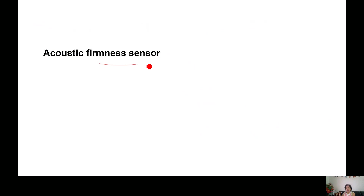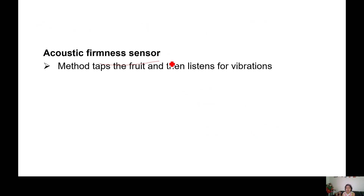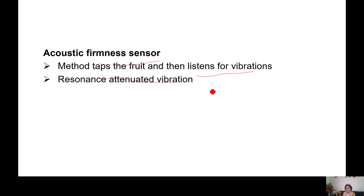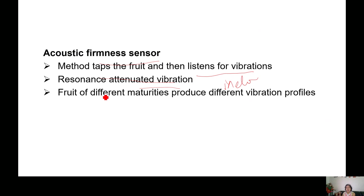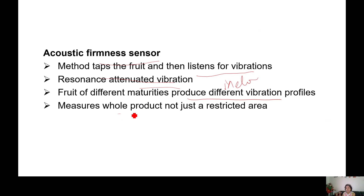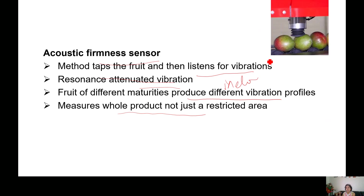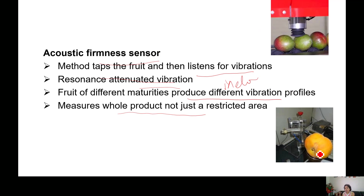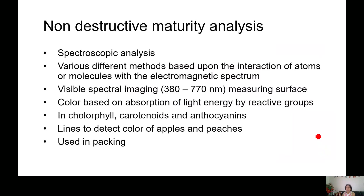Acoustic firmness sensors are also available, which can be correlated with maturity indices. These methods tap the fruit and listen to the vibrations — for example, in melons — called resonance attenuated vibrations. Fruit of different maturity produces different vibration profiles, and the method measures the whole product, not just a restricted area. For example, mango will give a different vibration profile altogether, and amur fruit or persimmon will show a different pattern.